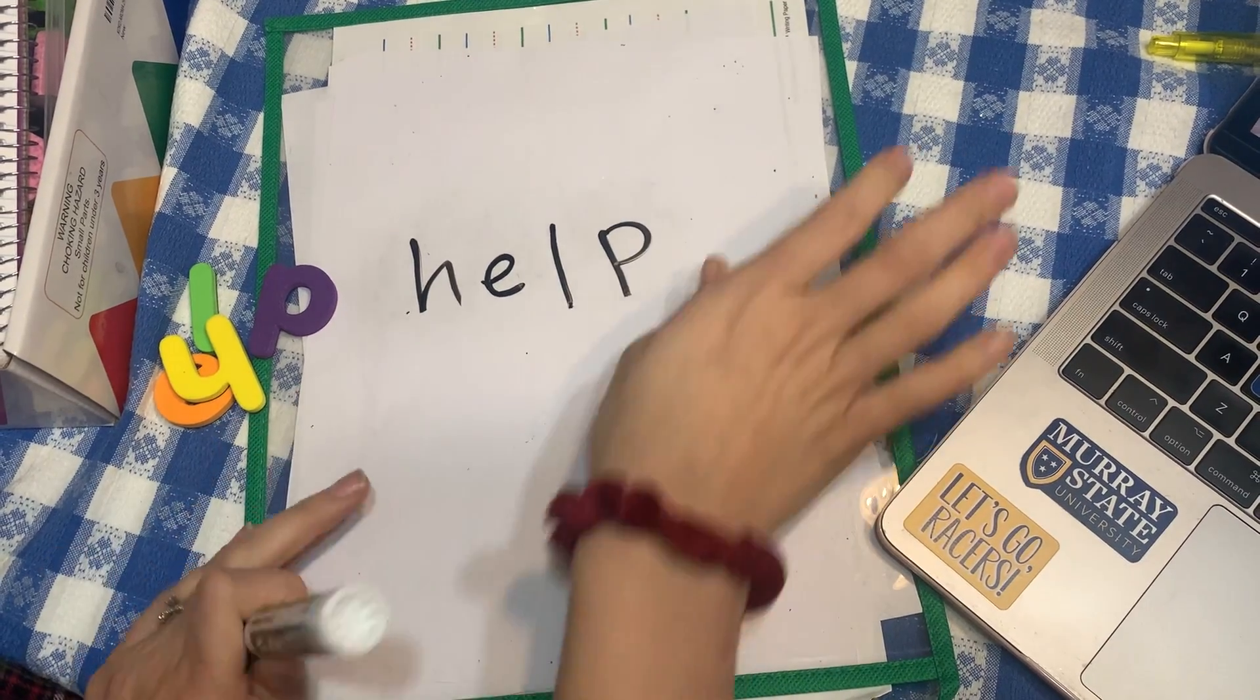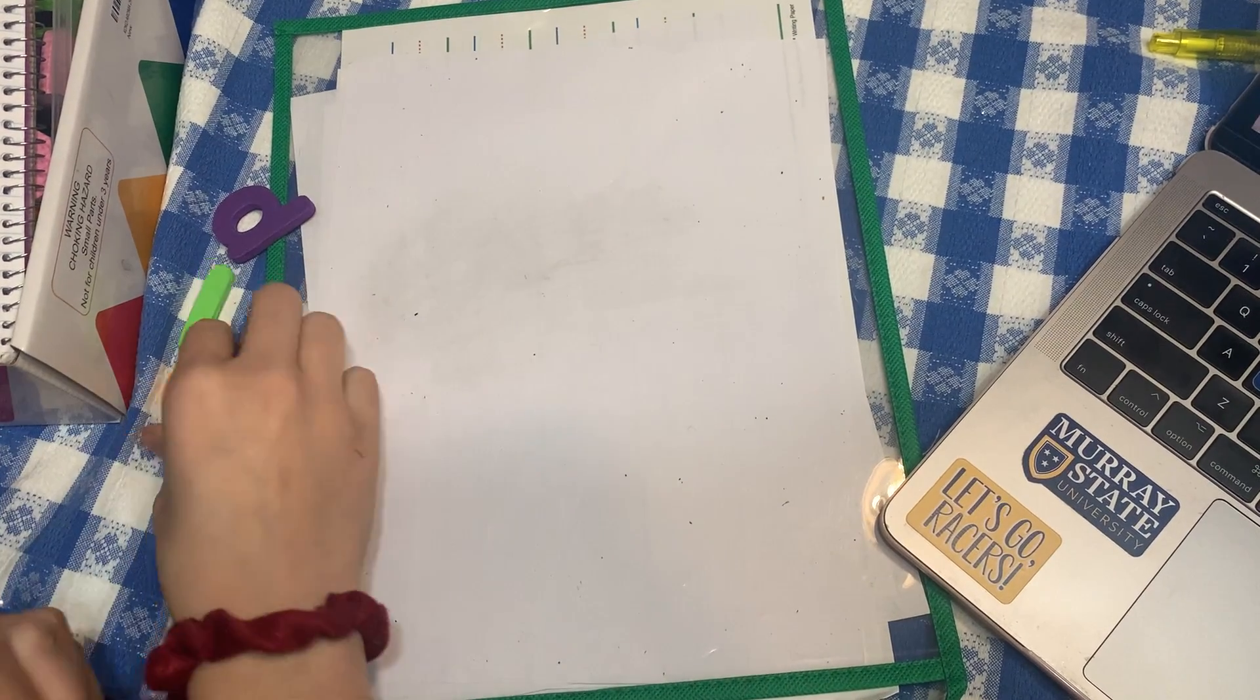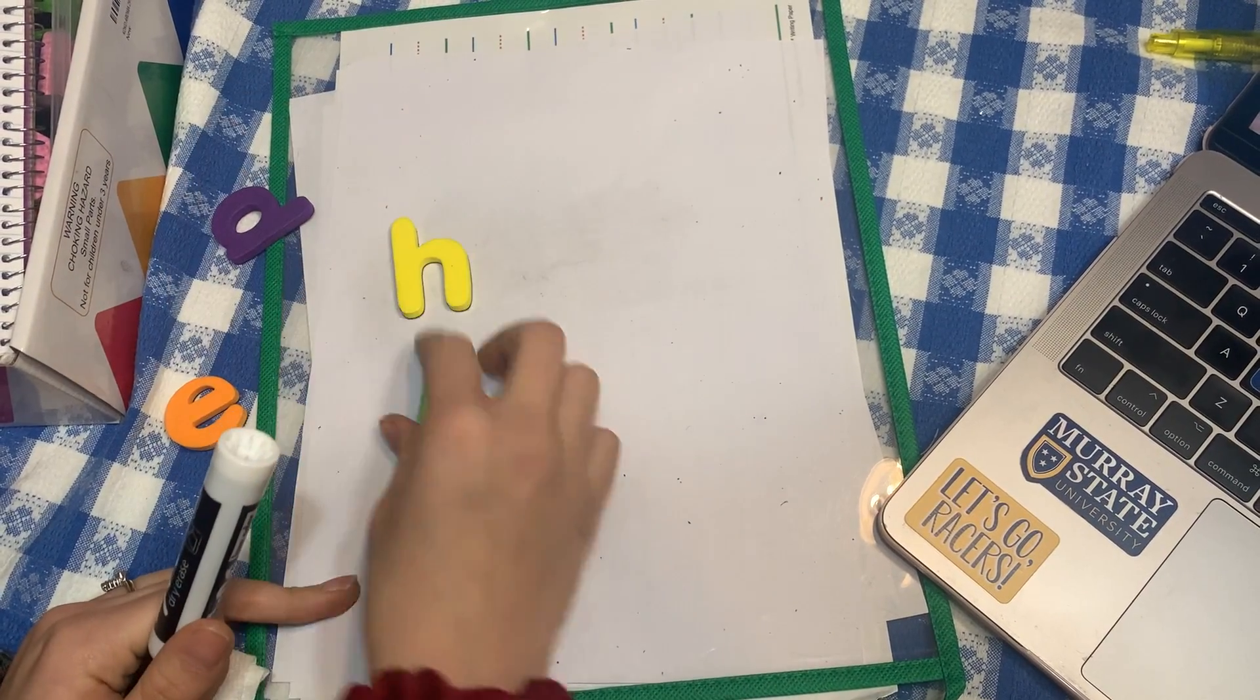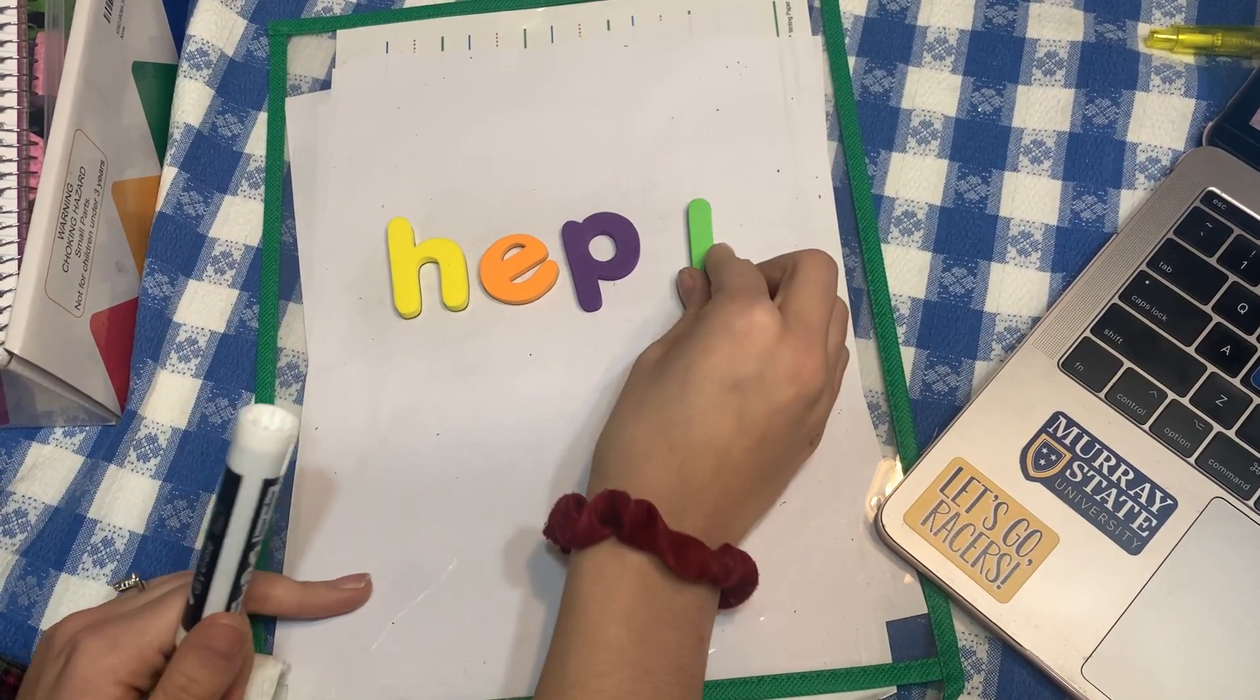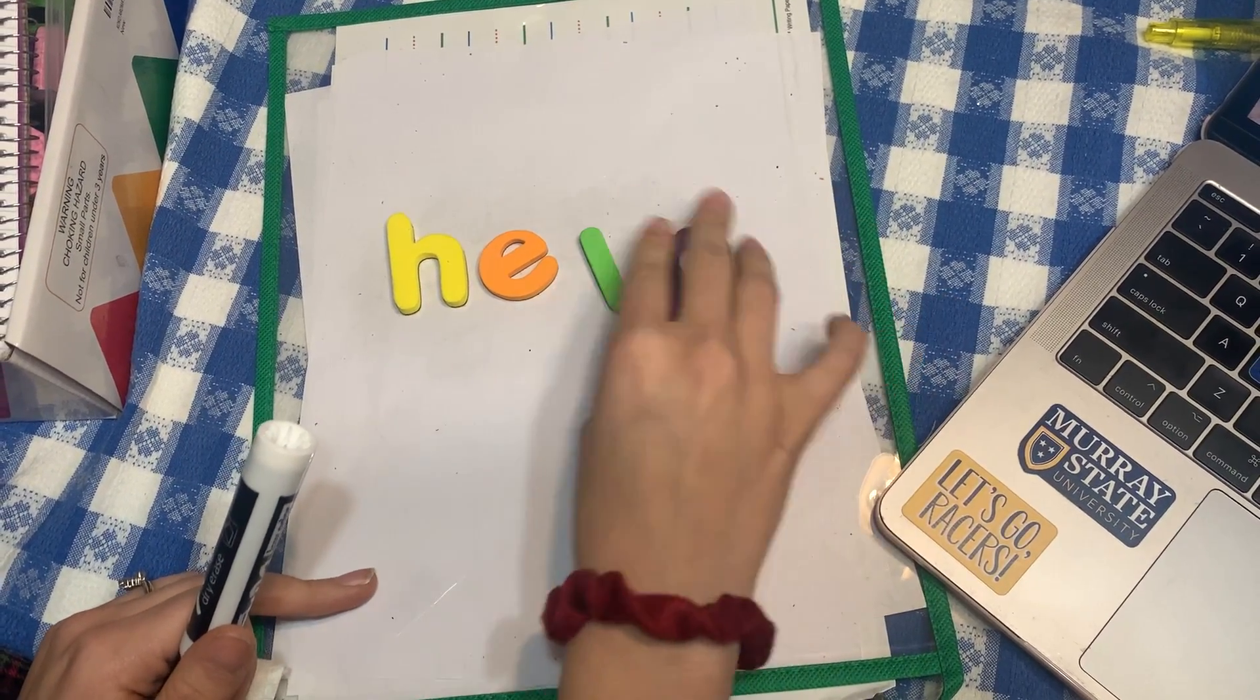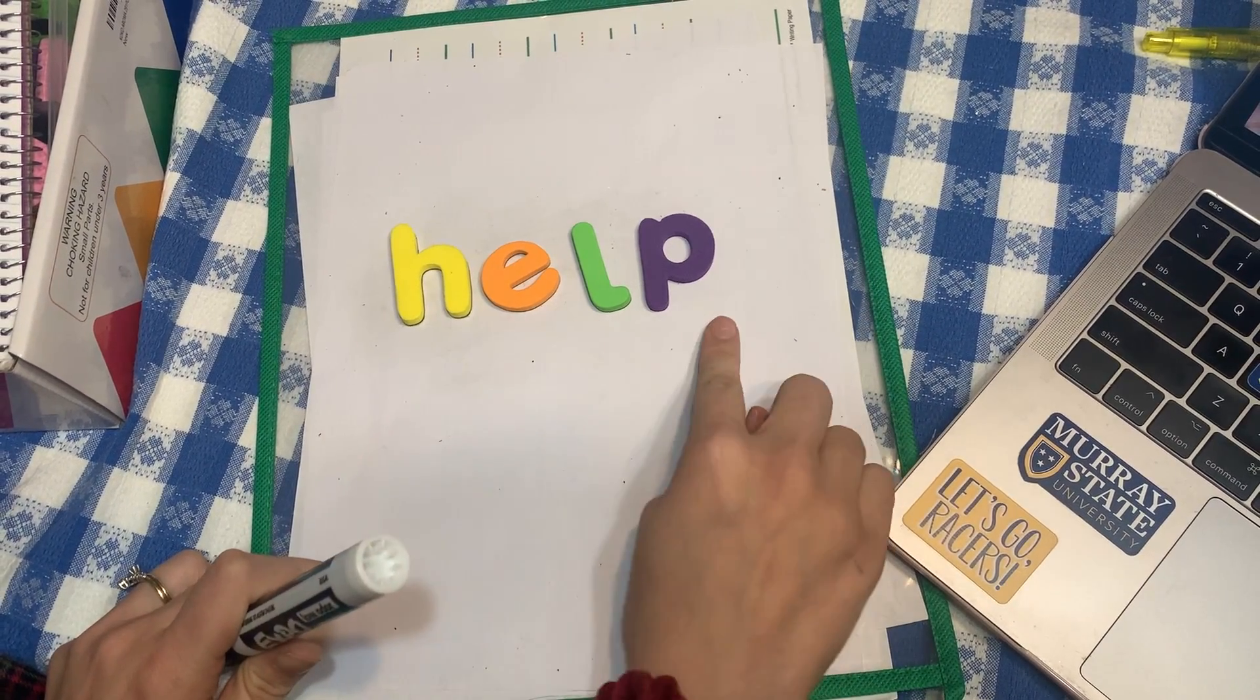After that, after the students have been fully exposed to the word, then you'll get out magnetic letters and do the mix and fix. When you do the mix and fix, set out the word, sound it out again.